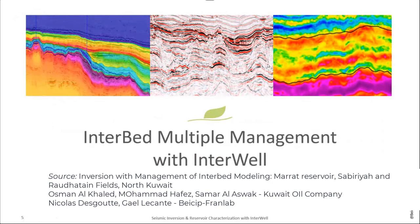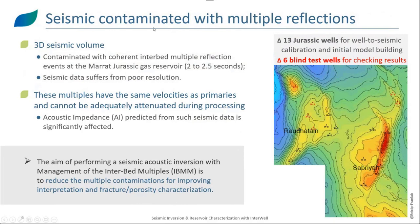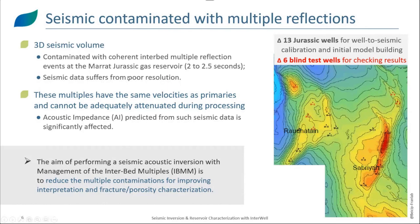I will now start with the presentation of a study in which we have applied our methodology. I will first describe the study and then give you an explanation of the methodology for IBMM. Our study is contaminated with multiple reflection. We have a seismic 3D volume contaminated with current interbed multiple reflections. The events at the Mara-Jurassic gas reservoir from 2 to 2.5 seconds suffer from poor resolution and interbed multiple reflections. These multiples have the same velocities as the primaries and cannot be adequately attenuated during the pre-processing of the seismic data.